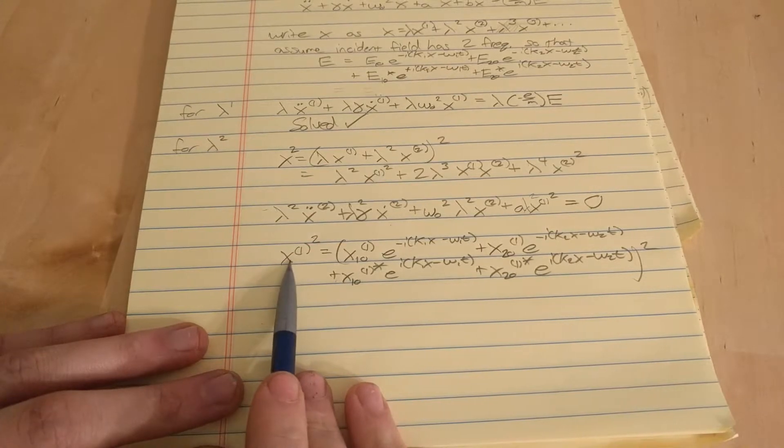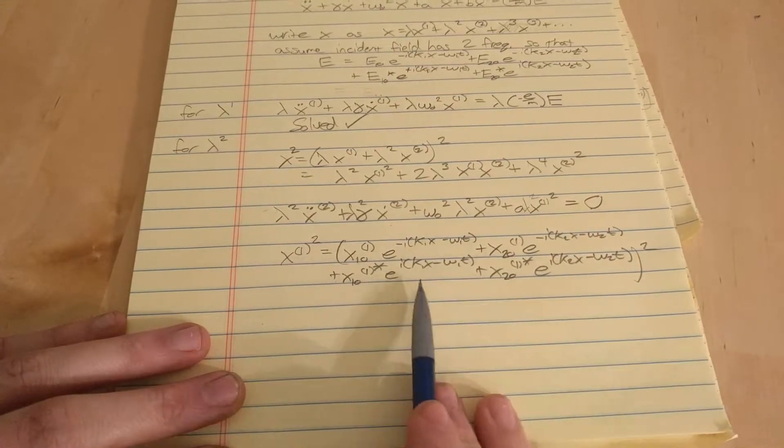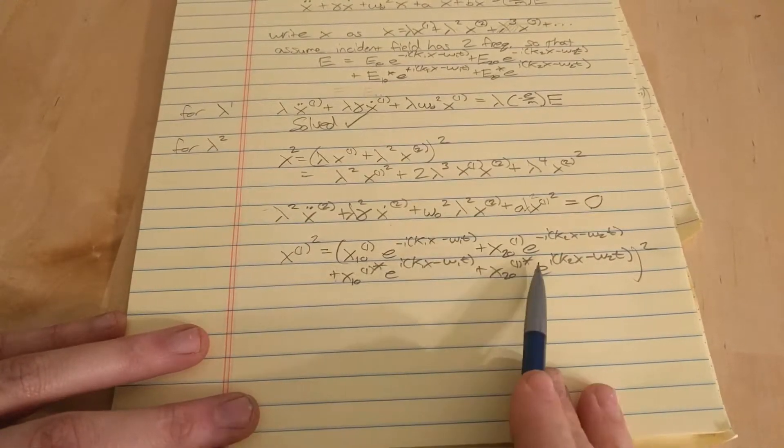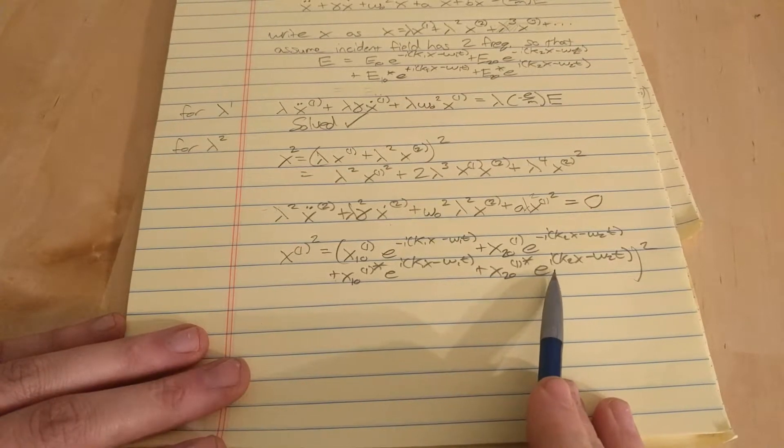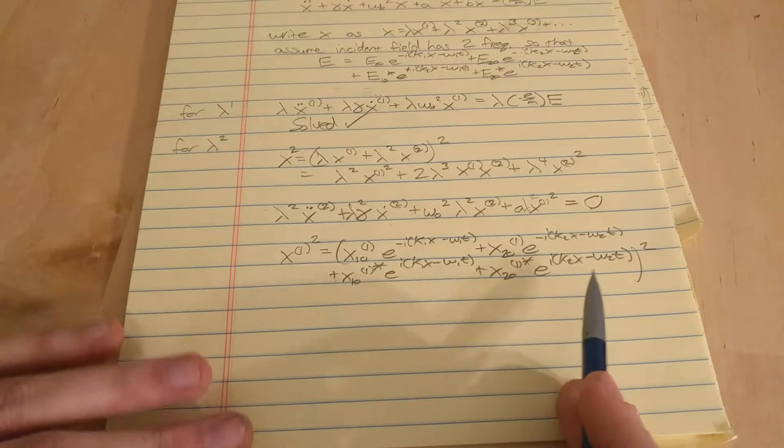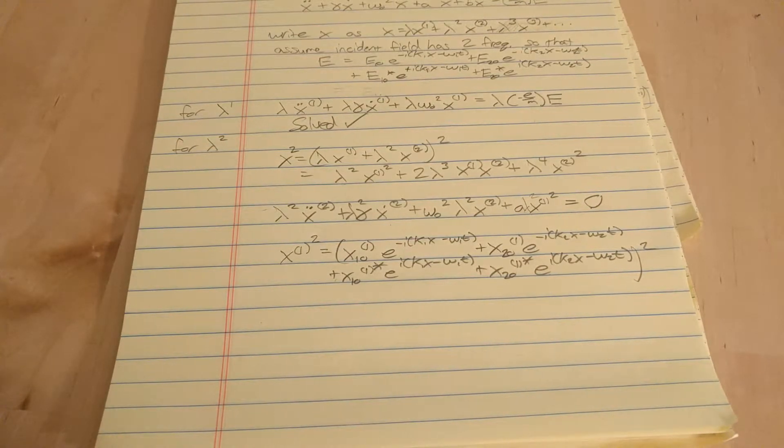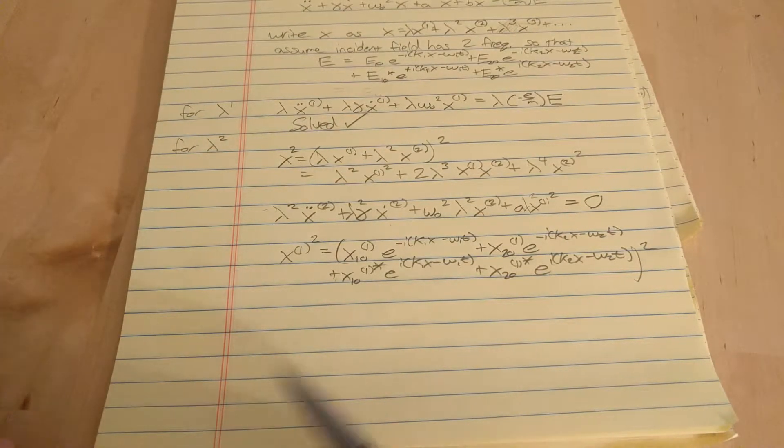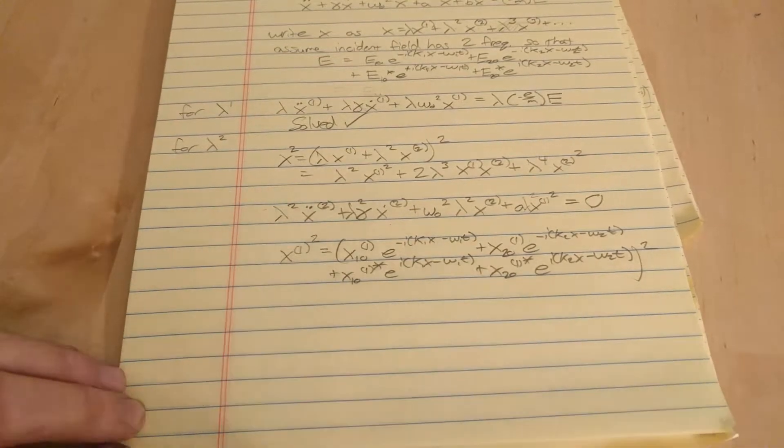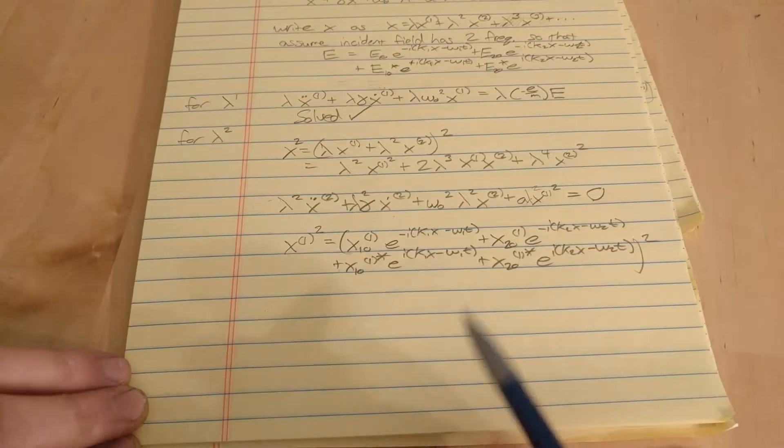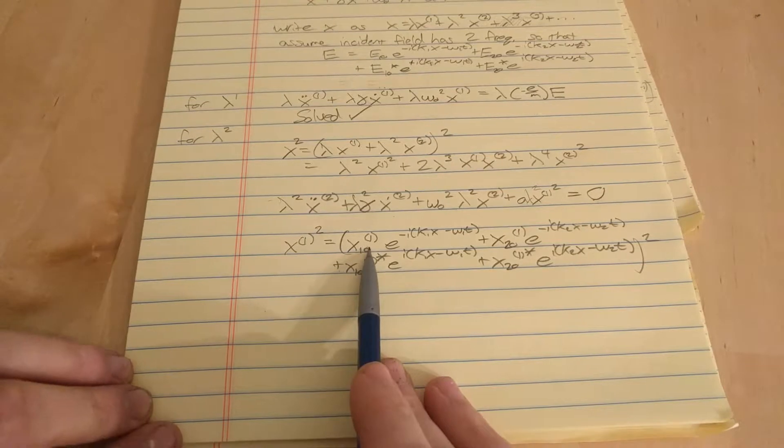Our X1 part is going to be all this squared. I'm not going to square all this because we're going to get 16 terms, but there's only going to be eight, I don't know if it's right to call them unique terms, but there's going to be eight terms plus their complex conjugate, and you can sort of see that in your head.